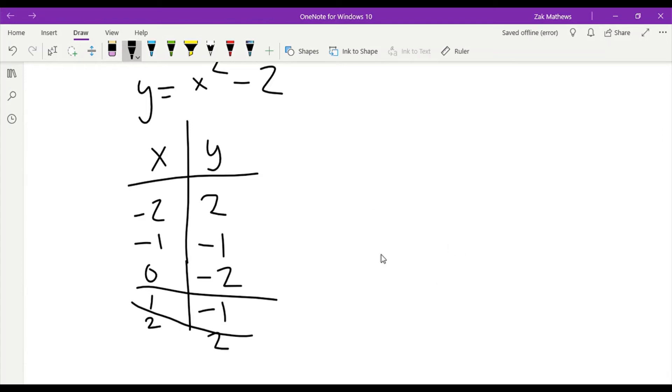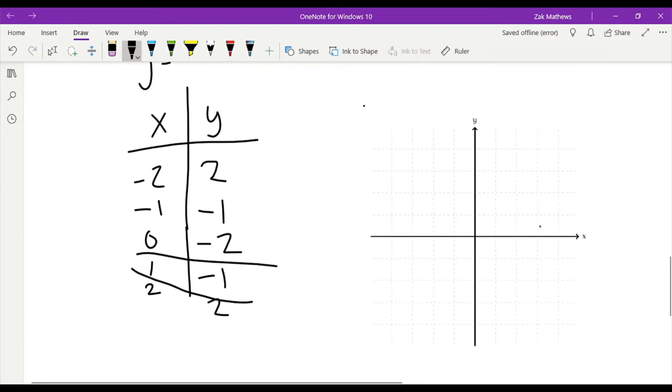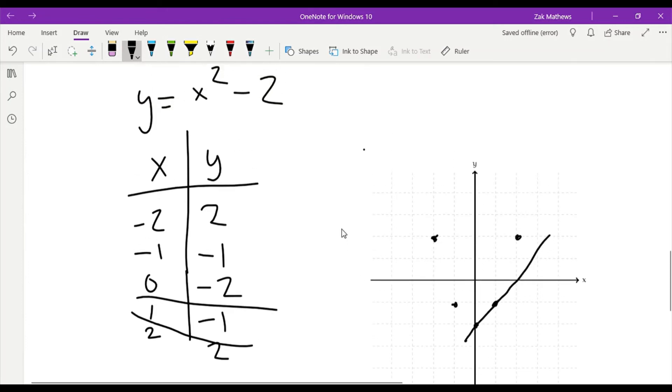Now I would like to graph this. I'm going to place these onto my xy axis. My x value is negative two, so I'm going to go backwards two and then up one, two. That will be my first point. Negative one, negative one. Zero, negative two. One, negative one. And two, two. What I see this time is it's not a straight line, because if I were to try and connect these two points on a straight line, I would not hit that third. And that's fine, it's not a line, it's this quadratic equation.